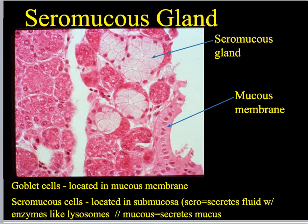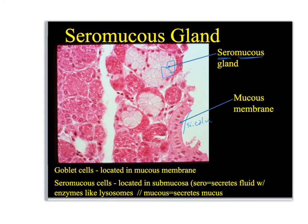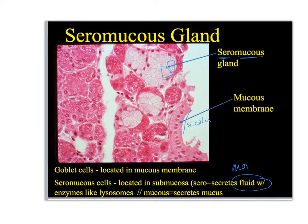We don't have a great slide in APR for looking at the seromucous glands, so I borrowed this one from online. I've got some mucous membrane — this one happens to be simple columnar, so it's a little bit deeper down. Here I can see a nice alveolar-shaped gland called a seromucous gland. It secretes a more watery fluid than the thicker mucus and is full of lysosomes — it's really more for cleaning and pathogen defense. Whereas goblet cells secrete thicker mucus that is more for trapping.